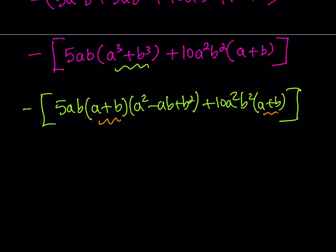But there are more common factors, because I also have the 5 and the a and the b. Put it all together with the negative sign, you'll have a common factor of negative 5 a b multiplied by a plus b.